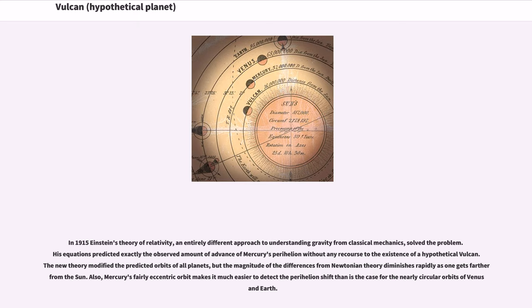In 1915 Einstein's theory of relativity, an entirely different approach to understanding gravity from classical mechanics, solved the problem. His equations predicted exactly the observed amount of advance of Mercury's perihelion without any recourse to the existence of a hypothetical Vulcan.